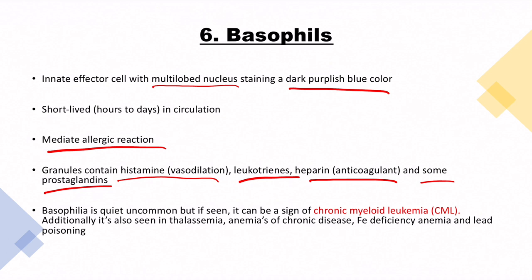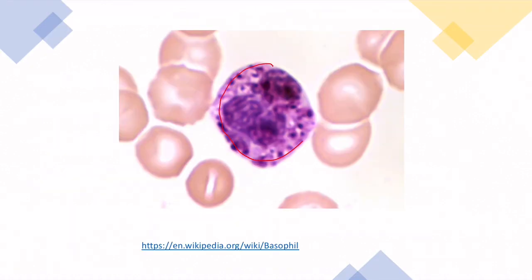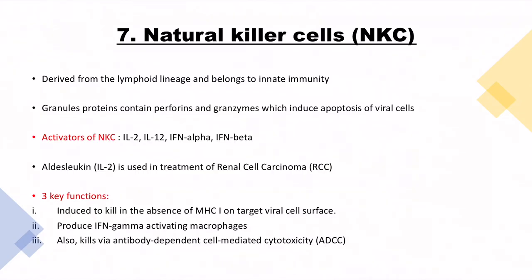Basophilia is quite uncommon, but when seen it can be a sign of a malignancy called chronic myeloid leukemia (CML). It is also seen in thalassemia, anemia of chronic disease, iron deficiency anemia, and lead poisoning. The structure of a basophil shows multiple lobes (multi-lobed nucleus), granules, and the characteristic dark purplish-blue color.